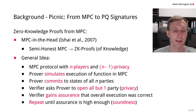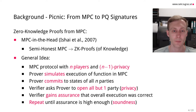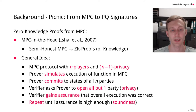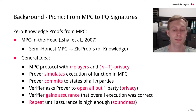The verifier can then ask the prover to open all but one chosen party. Since we have this privacy property, the verifier cannot learn anything from these N-1 opened parties, but he can still verify that these N-1 opened parties are consistent with each other, gaining some assurance that the function was actually executed correctly. This can be repeated again and again until the verifier gains enough assurance to accept the proof.